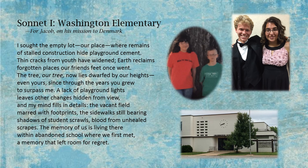Sonnet one: Washington Elementary, for Jacob on his mission to Denmark. I sought the empty lot, our place, where remains of stalled construction hide playground cement. Thin cracks from youth have widened. Earth reclaims forgotten places our friend's feet once went. The tree, our tree, now lies dwarfed by our heights, even yours, since through the years you grew to surpass me. A lack of playground lights leaves other changes hidden from view, and my mind fills in details. The vacant field marred with footprints, the sidewalks still bearing shadows of student scrolls, blood from unhealed scrapes. The memory of us is living there, within abandoned school where we first met. A memory that left room for regrets.